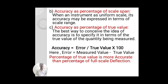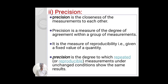Accuracy gives the mathematical relation or formula: accuracy equals error divided by true value, multiplied by 100. Error equals true value minus measured value. The percentage of true or specified value is more accurate than the percentage of full scale deflection.